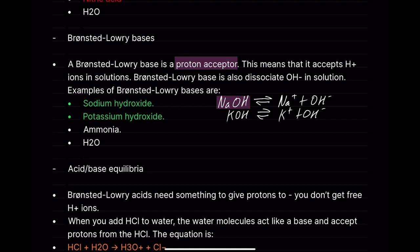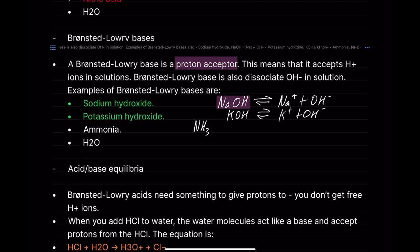Ammonia, NH3, is an example of a weak base — not a weak acid. It's hard to understand visually why NH3 acts as a base. I'll go through that in another video, but I just want to show which ones are weak bases and weak acids. Ammonia is basic, even though it looks like it should be acting as an acid, and it technically can act as an acid in certain contexts.